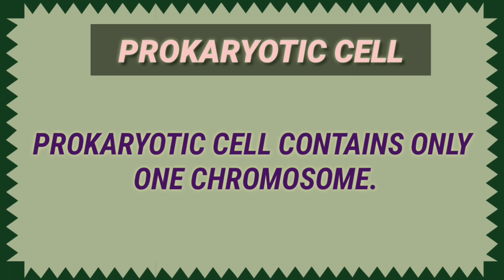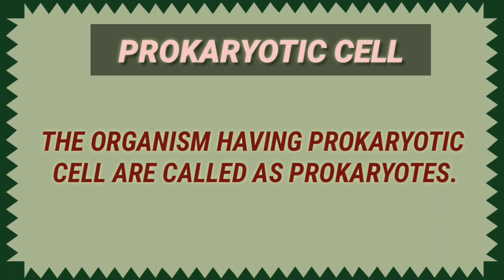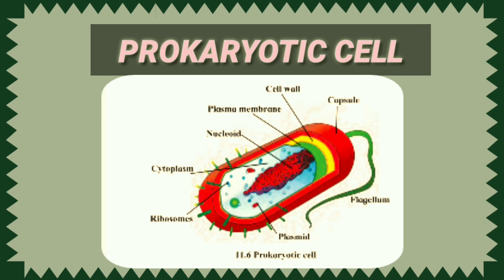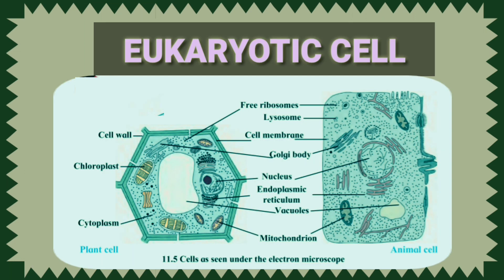The size of prokaryotic shell ranges from 1 to 10 micrometer. Prokaryotic shell contains only one chromosome. All the organisms having prokaryotic shell are unicellular. The organisms having prokaryotic shell are called as prokaryotes. Various bacteria and blue-green algae have prokaryotic shell — bacteria and blue-green algae are examples of prokaryotic shell.